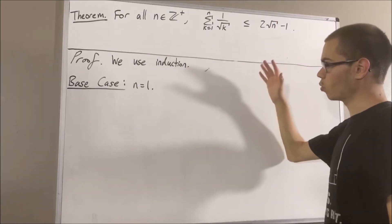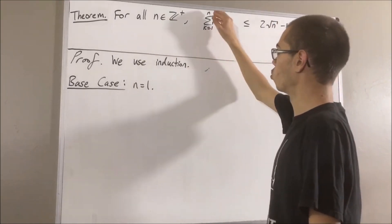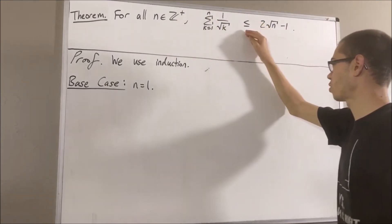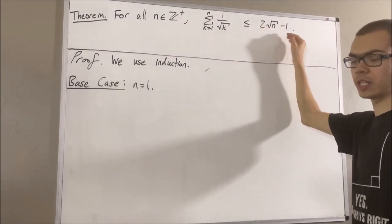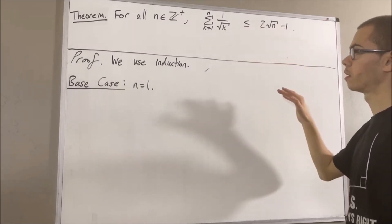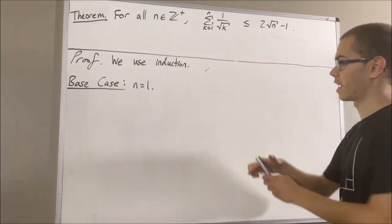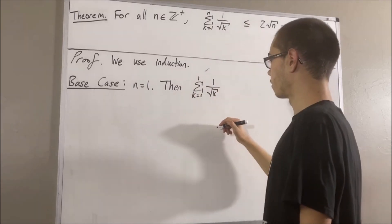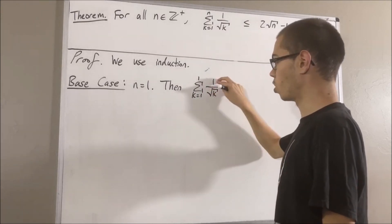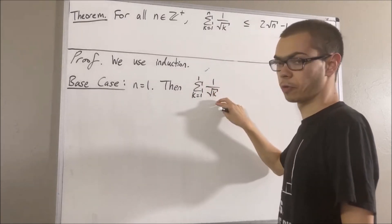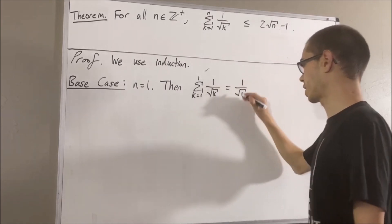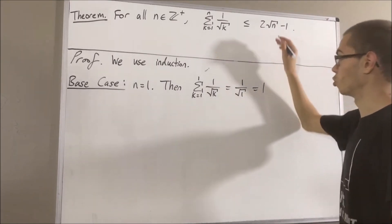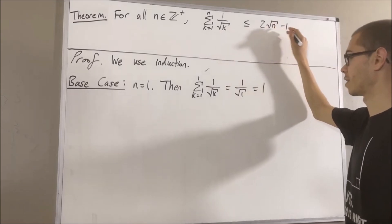So we want to show that the sum from k equals 1 to 1 of 1 over the square root of k is less than or equal to 2 square root of 1 minus 1. Let's start by writing the left-hand side. This is just equal to 1 over the square root of 1, and that's just equal to 1.